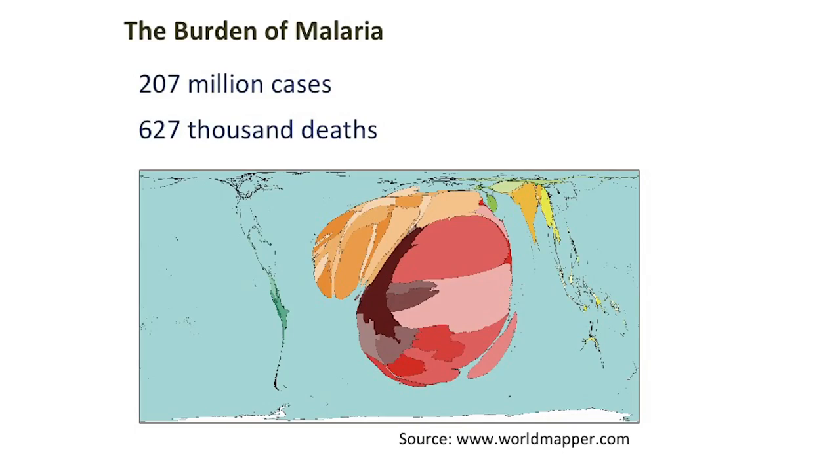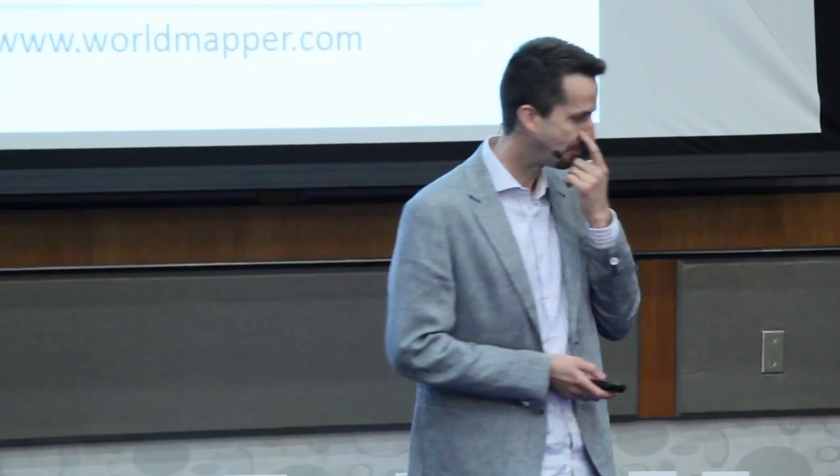On this map, geographic regions of the world are represented, scaled proportionally to how much malaria they experience. And as you can immediately see, Africa really jumps out. In fact, 90% of malaria deaths occur in Sub-Saharan Africa, and the majority of those are children.